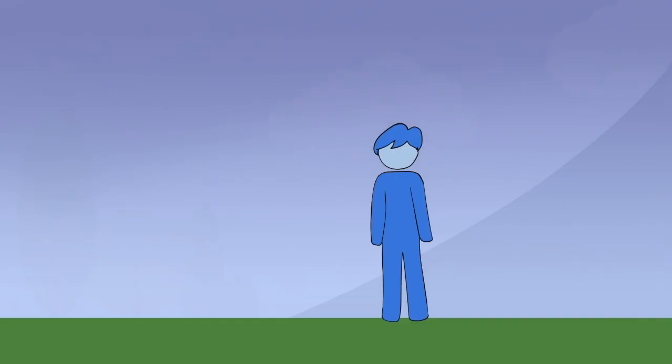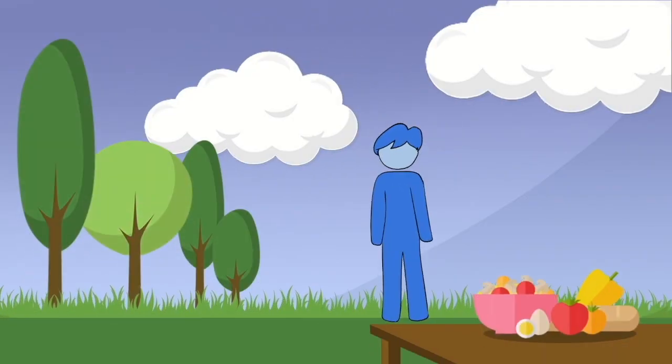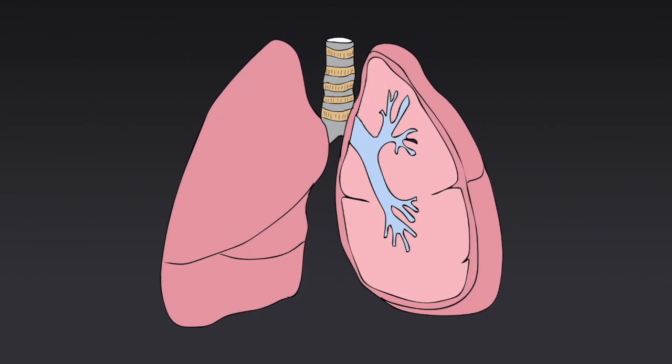How do our lungs work? Our body needs food and oxygen to survive. Lungs are the source of oxygen for our body. We all have two lungs, which are like a soft sponge protected by ribs.